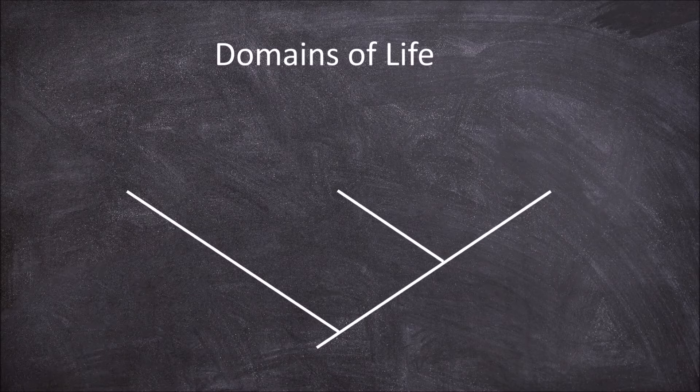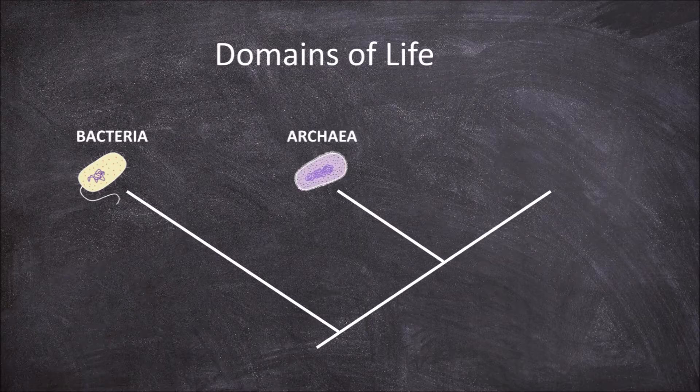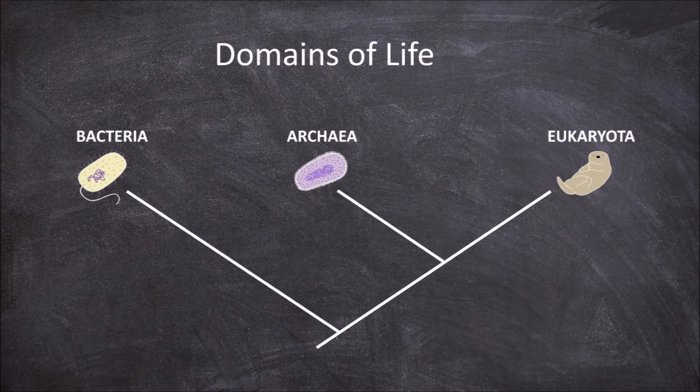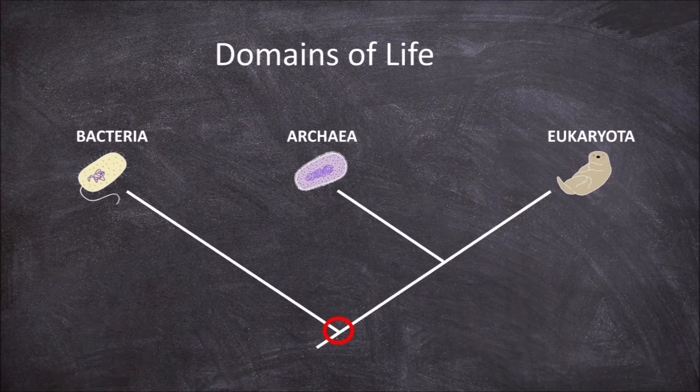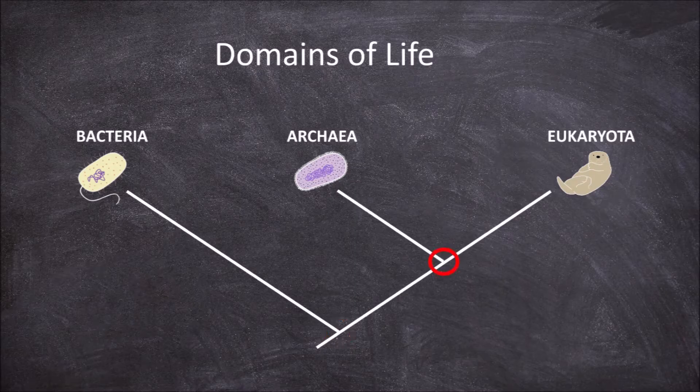These three domains are the bacteria, archaea and eukaryota, all sharing one last universal common ancestor. Archaea and eukaryota are thought to share a separate common ancestor from bacteria.